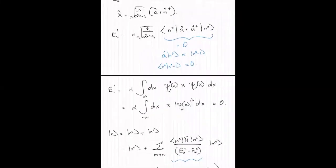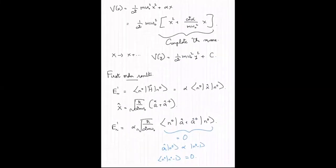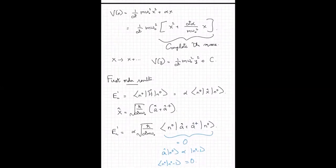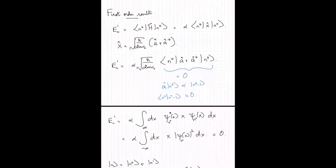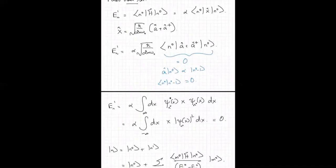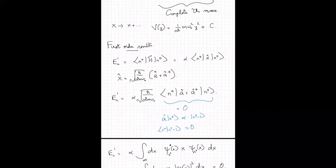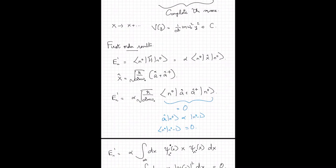This still leaves one question unanswered: if I solve this problem exactly, the energy levels are all shifted by a constant, but the first-order correction gives zero. To capture this constant shift, I have to calculate the second-order correction to the energy. It is the second-order correction that will give this constant term by which all energy levels are shifted. We will understand how to calculate the second-order corrections in the next lecture.